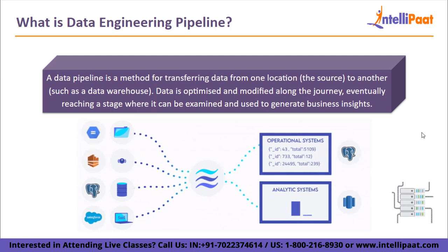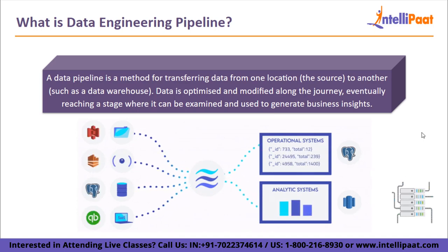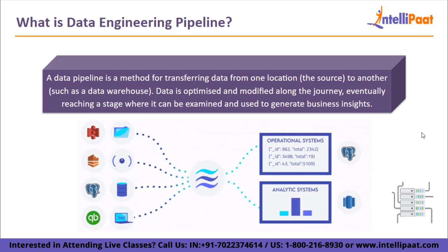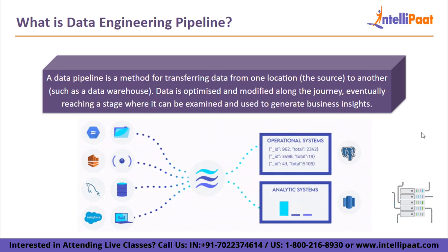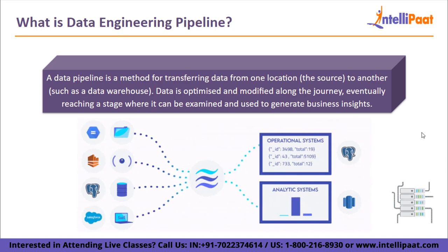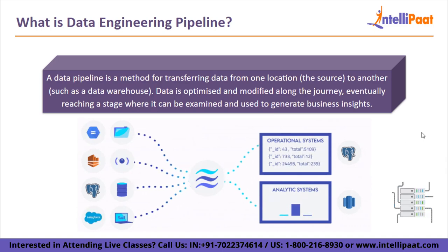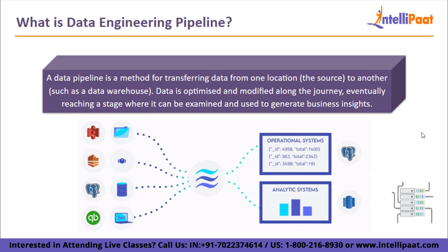Many of the manual processes required in processing and improving continuous data loads are now automated by modern data pipelines. This typically entails loading raw data into a staging table for temporary storage, modifying it and then inserting it into the final reporting tables.